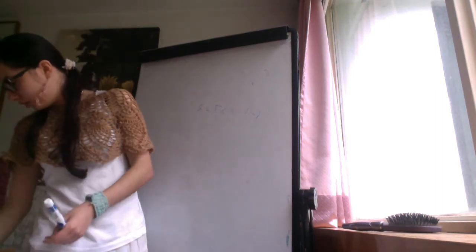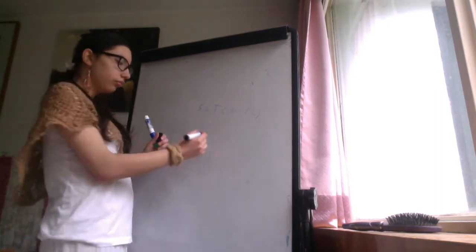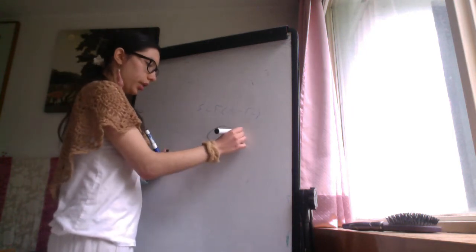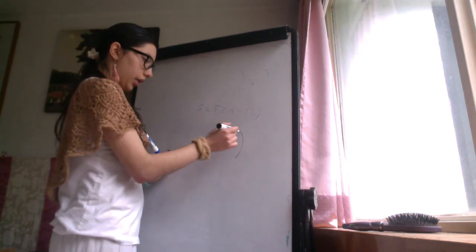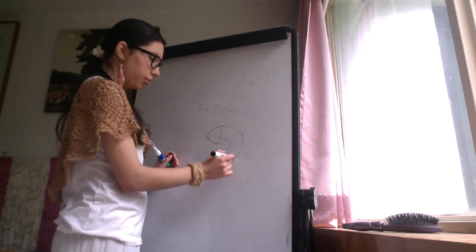These fasciculi connect - let me draw the brain. So here is the brain: frontal, parietal, occipital, and temporal lobes.